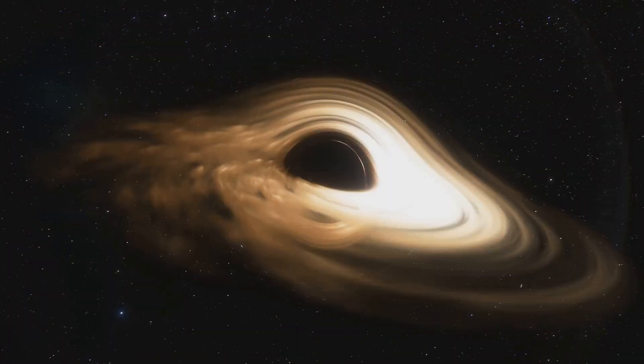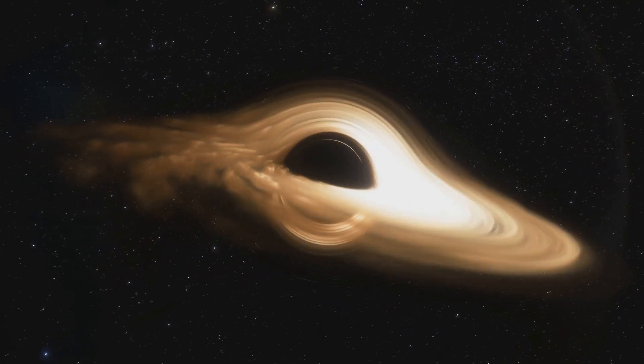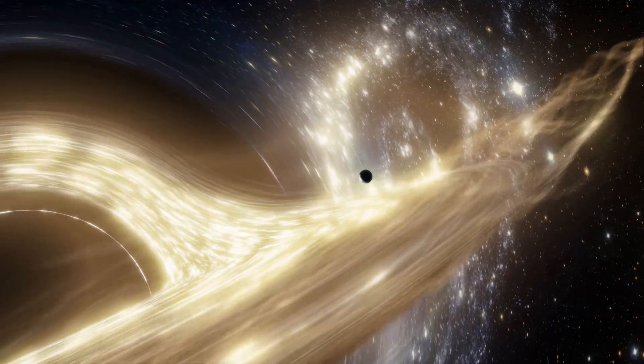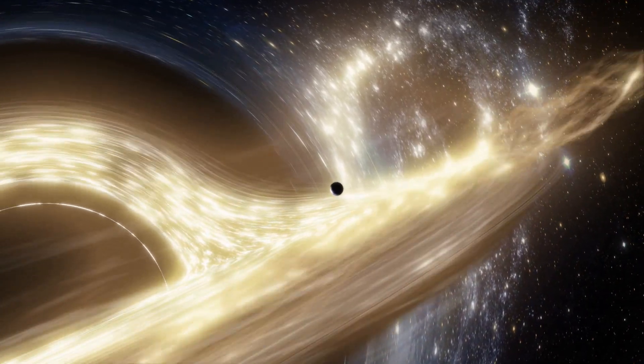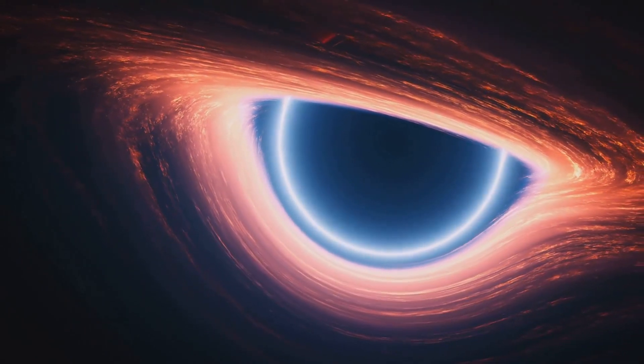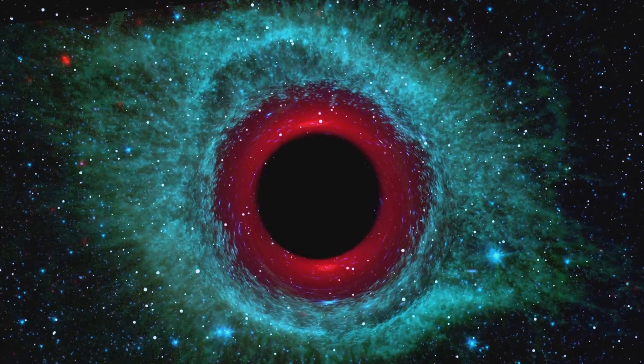Black holes are often depicted as cosmic vacuum cleaners. As matter approaches a black hole, it spirals inward, forming an accretion disk. This disk can be incredibly hot, reaching millions of degrees Celsius. The intense heat is generated by friction within the disk. Some material is channeled away by powerful magnetic fields forming jets of high-energy particles. These jets can extend for thousands of light years.